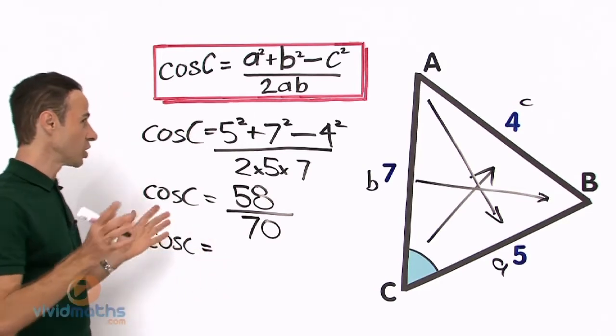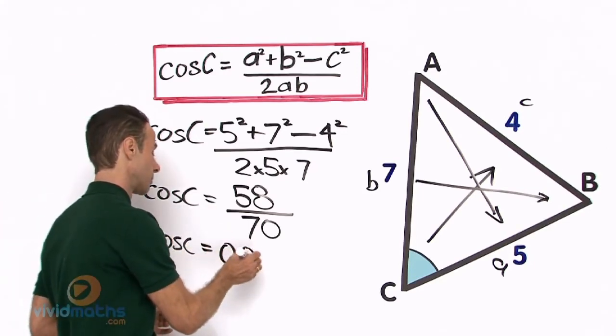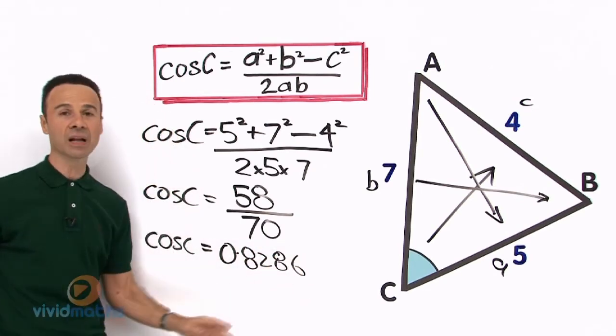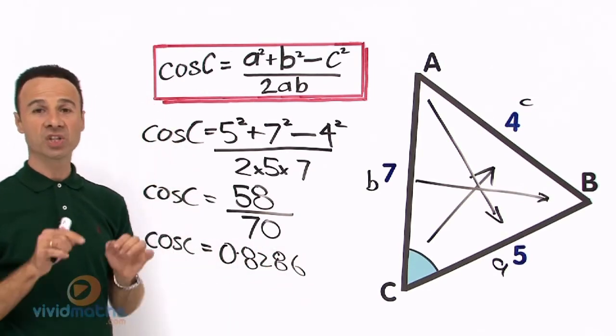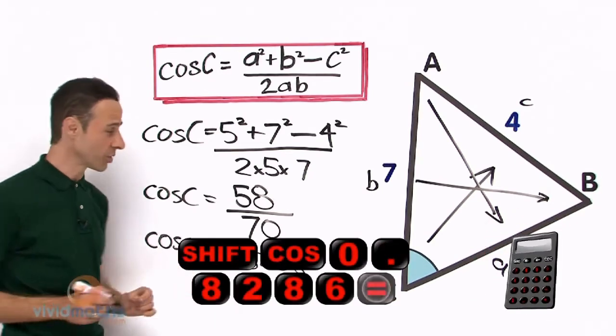You know it is going to be a decimal, it is going to be 0.8286. Cos C now, cos C equals that, what do we do to get the angle? We got a shift cos on both sides, so shift cos here will be left just with the C.